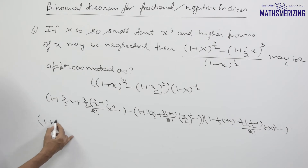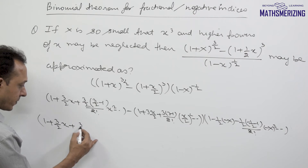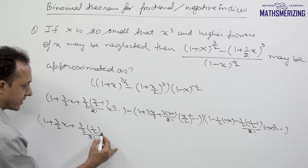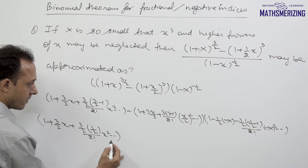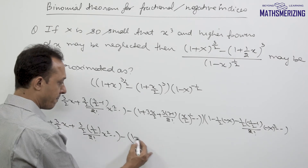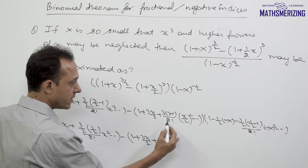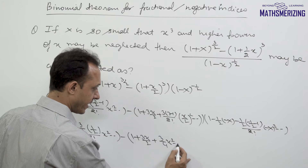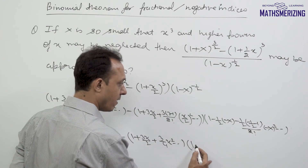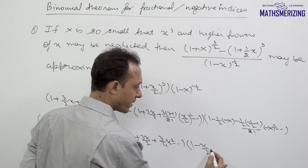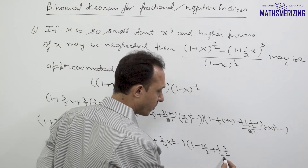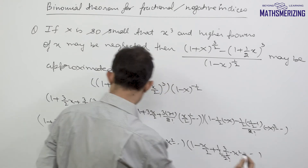Expanding: the first factor gives 1 + (3/2)x + (3/4)x². The middle factor gives 1 + (3x/2) + (3/4)x². After canceling common terms, we are left with minus 1 + (3x/2), and the third factor gives 1 - x/2, with the minus-minus becoming plus, yielding (1/2)(3/2)/2! · x².